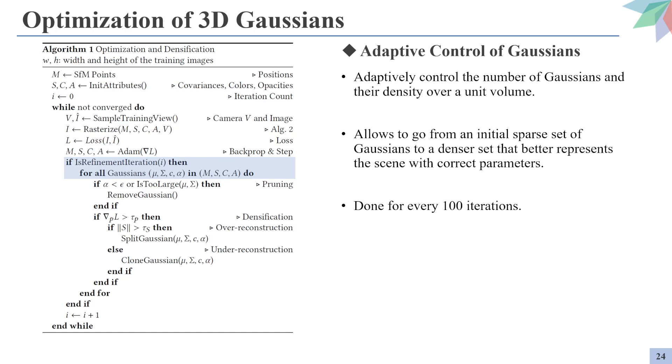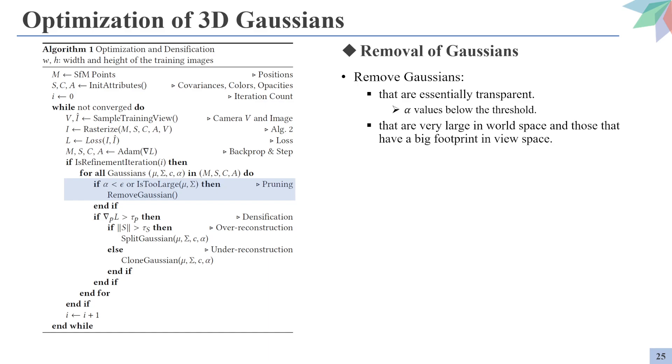The second optimization stage is done by adaptively controlling the Gaussians, which is done every 100 steps. This step refines the sparse set of Gaussians into a denser set that better represents the scene. The first method is the removal of unnecessary Gaussians. Gaussians that are too transparent with alpha values below the threshold are removed, and also the Gaussians that are morbidly large are also removed to facilitate the compact scene representation.